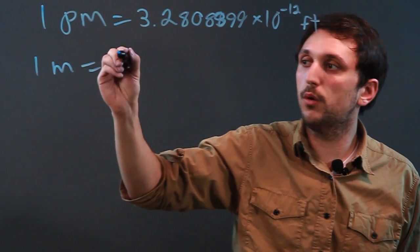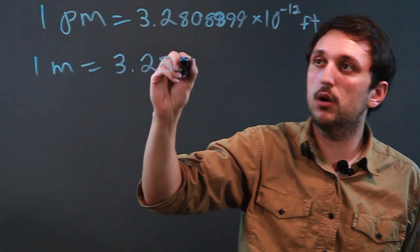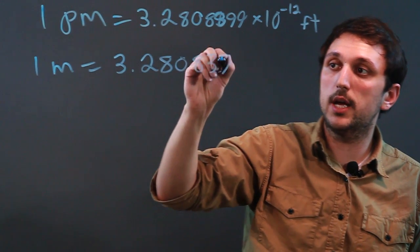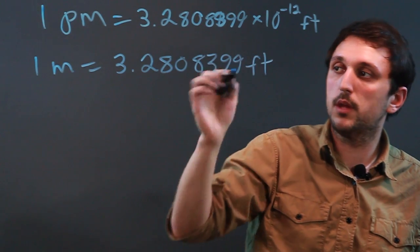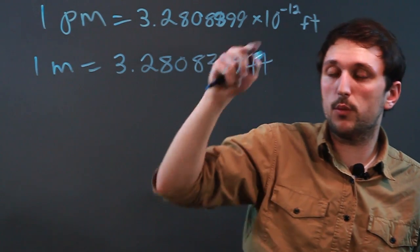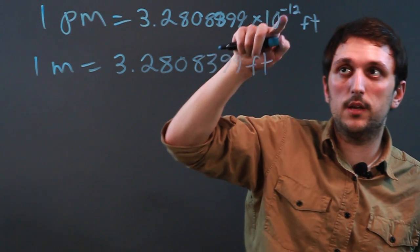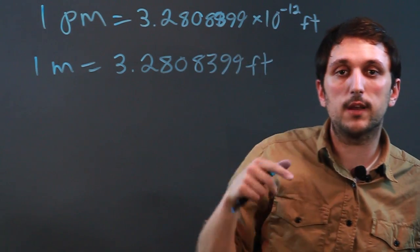So one meter equals 3.2808399 feet. And because we're going one trillionth, we then just say times 10 to the negative 12 to get feet.